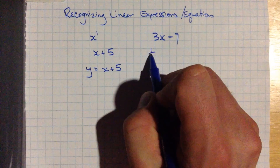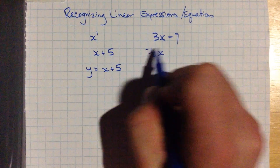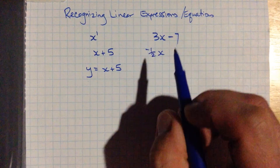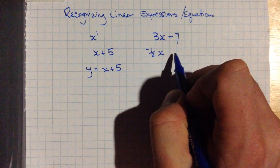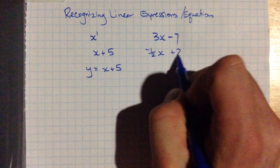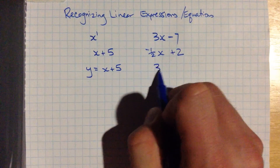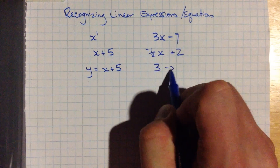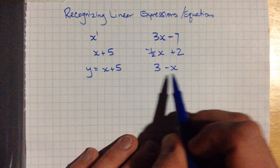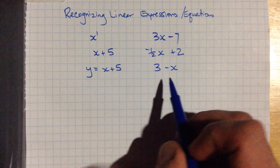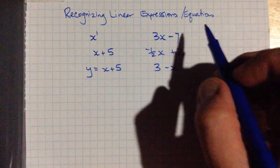How about something with a fraction? Say negative one-half times x plus 2. Or we could change the order of those things around — 3 minus x is the same as negative x plus 3. Those are all linear.